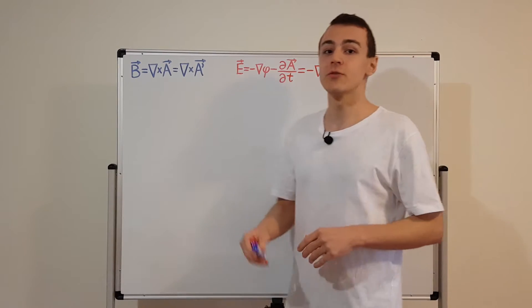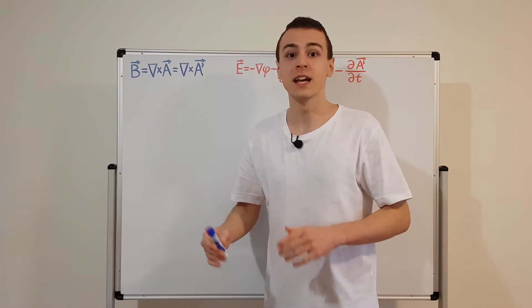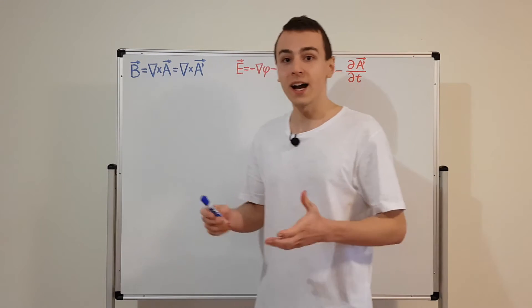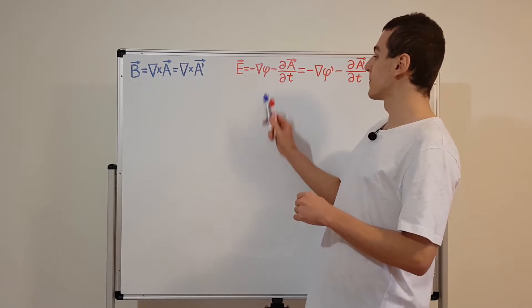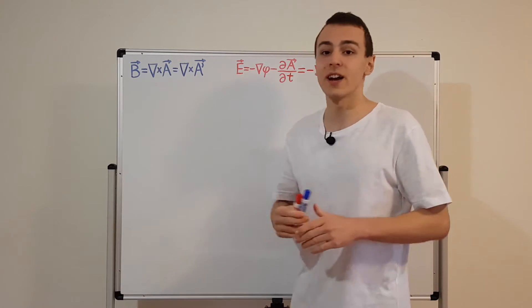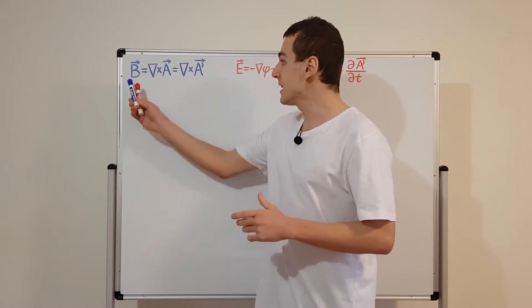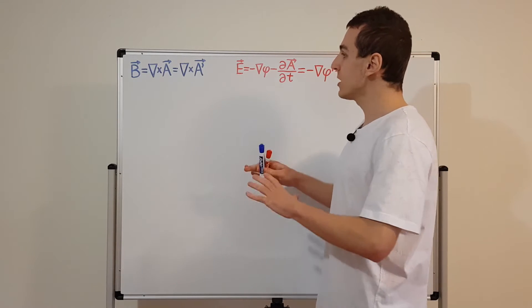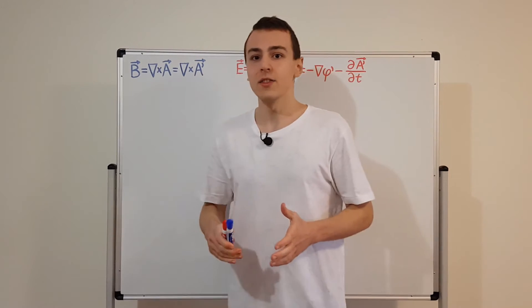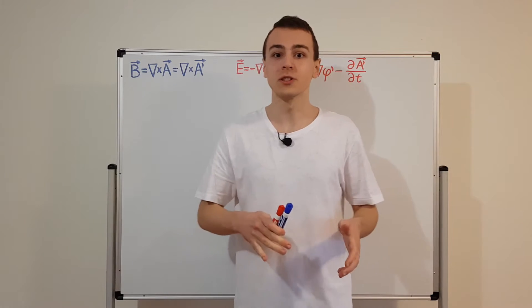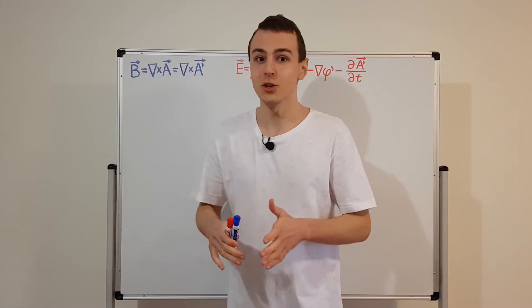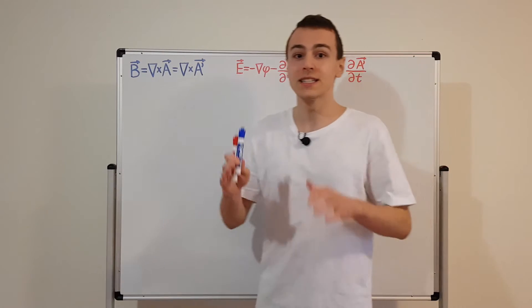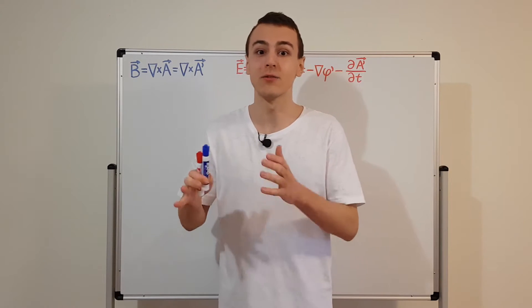These are expressions for the electric and magnetic fields in terms of the scalar and vector potentials. Phi is the scalar potential and A is the vector potential, while B is the magnetic field and E is the electric field. The point of this video is to show that the scalar and vector potentials are not unique — you can choose different versions of A and phi and still get the same electric and magnetic fields.